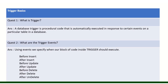So basically, what is a trigger? When you perform any DML operation — DML means create, update, or delete any record — the trigger will automatically fire. This is called a trigger, because when we perform any DML operation, it automatically occurs.